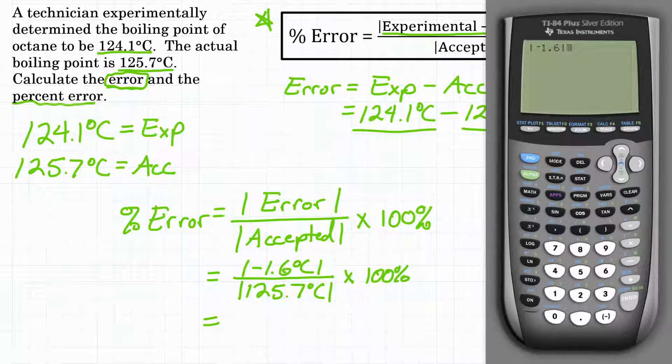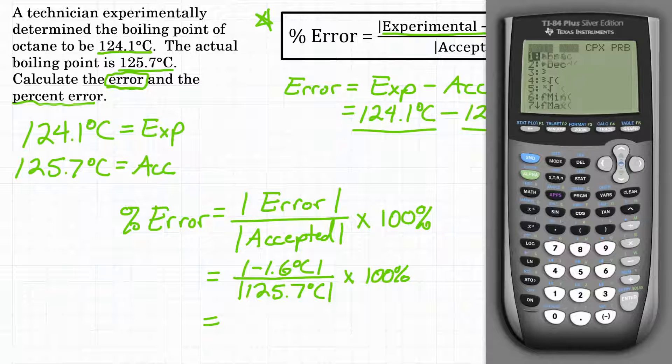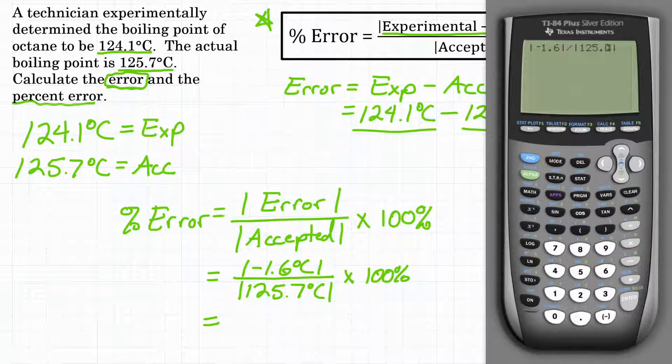All right, and then we are going to divide that by, again, absolute value. So I'm going to hit math over and then enter for number one, 125.7. Now, if you don't have that function for absolute value, it's already positive. You don't really even need to change anything. Just use 125.7. Okay, and then we're going to multiply all of that by 100. Hit enter.